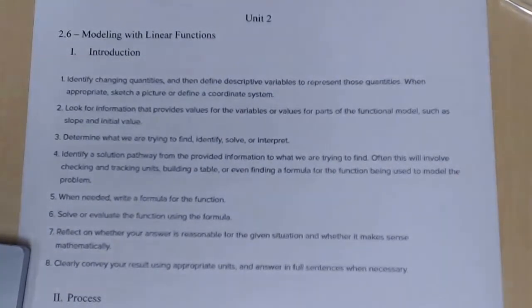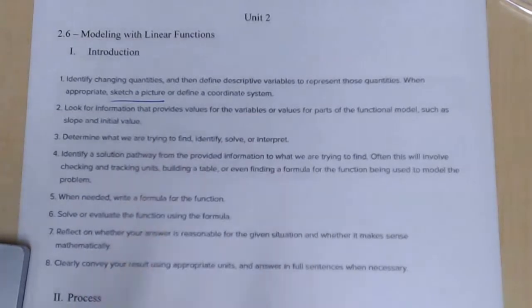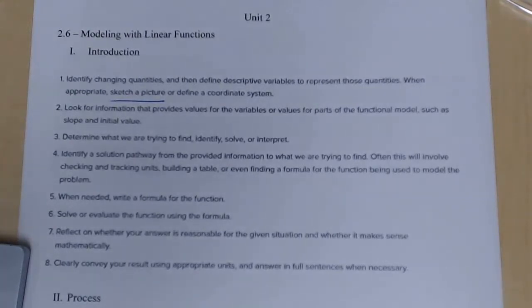When appropriate, sketch a picture or define a coordinate system. So read the problem over. Look at what information you have. Maybe sketch a picture. Look for information that provides values for the variables or values for part of the functional model, such as slope or initial value. Determine what we're trying to find. Identify, solve, interpret.